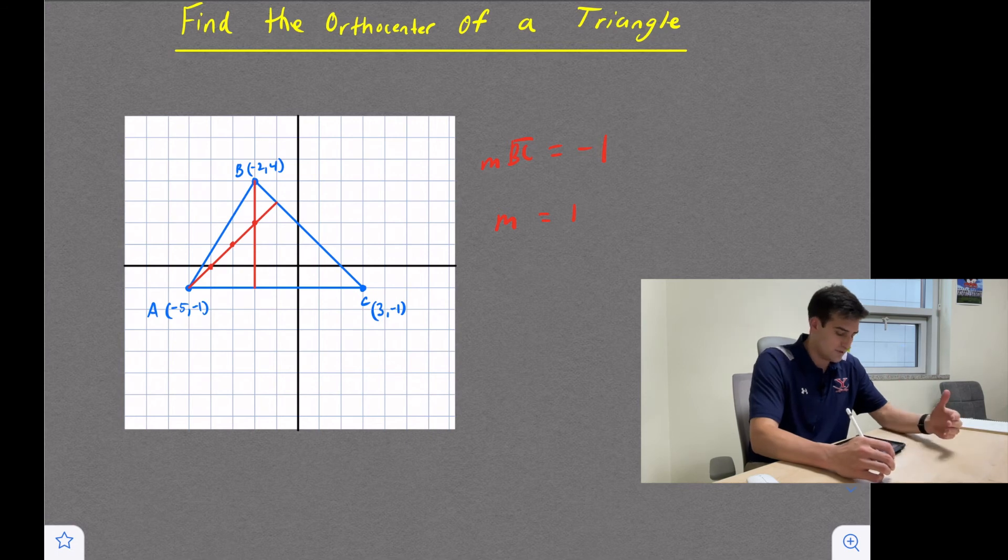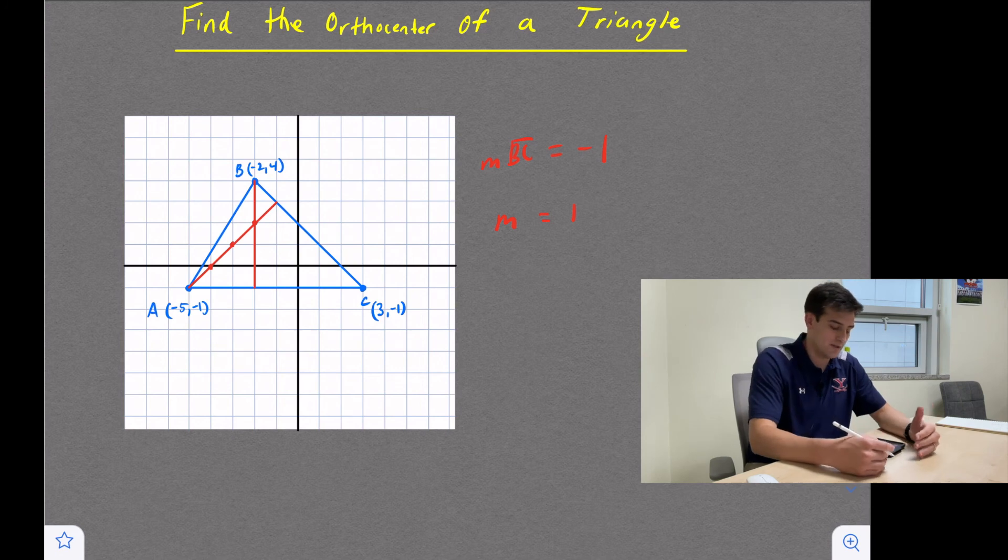So I could draw the other altitude from point C to side AB, but I don't have to because I already have the intersection. So I know where this orthocenter is located. So it's located right here.